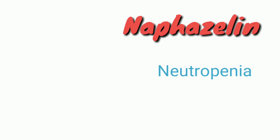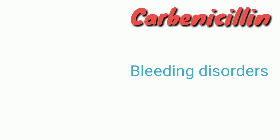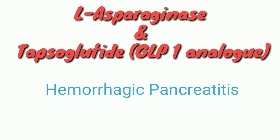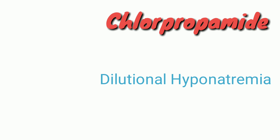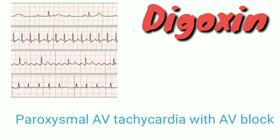Nafcillin causes neutropenia and abscess formation. Carbenicillin causes bleeding disorders along with purpura. L-asparaginase and exenatide — a GLP-1 agonist — cause hemorrhagic pancreatitis. Chlorpropamide causes dilutional hyponatremia. Digoxin's main effect on the heart is paroxysmal atrial tachycardia with AV block.